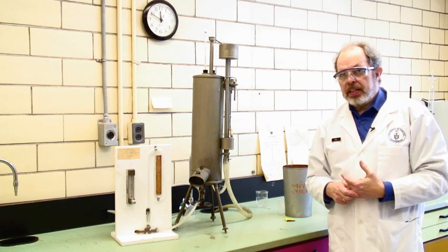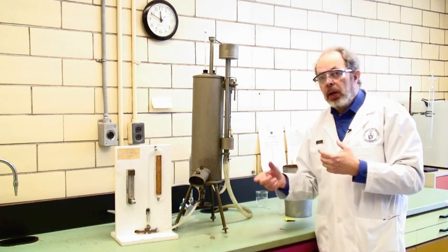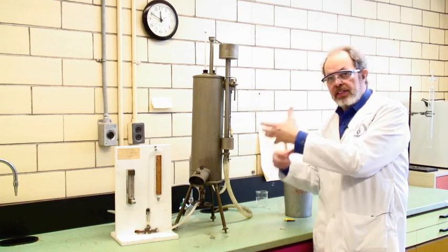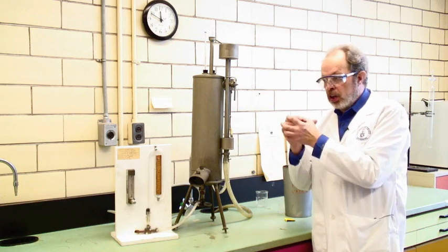The Junkers calorimeter is a flow calorimeter, it's not a batch. So the heat transfer is taking place constantly not in one lump.